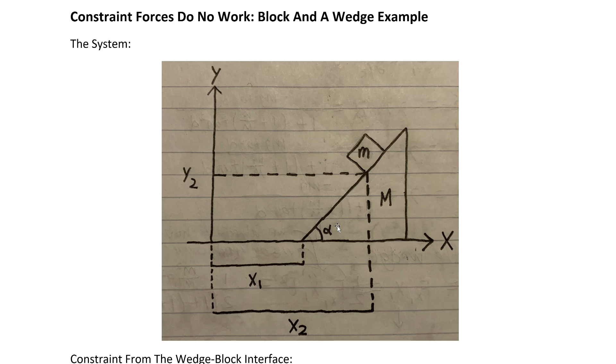The system we're dealing with consists of a wedge of mass capital M that can move frictionlessly on the x-axis, and on top of that a block of mass little m that can move frictionlessly on the angled surface of the wedge. The angle I've labeled alpha, and I've also drawn out the convenient generalized coordinates here: x2 and y2 for the location of the little block mass, and then simple x1 for the motion of the block. We're also taking this entire system to be under the influence of gravity in the negative y direction.